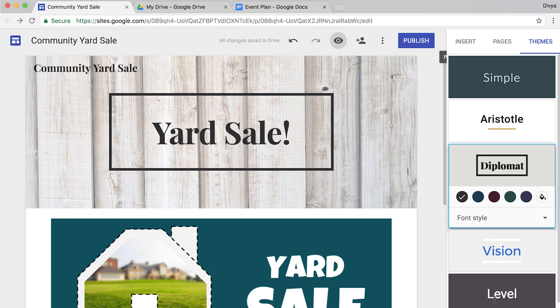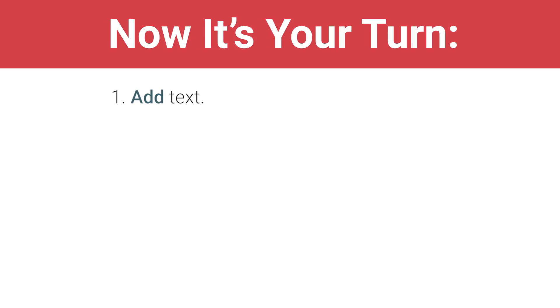Now it's your turn. Add text from your event plan into text boxes. Choose a theme and preview for different devices. Then move on to the next video to add another page.